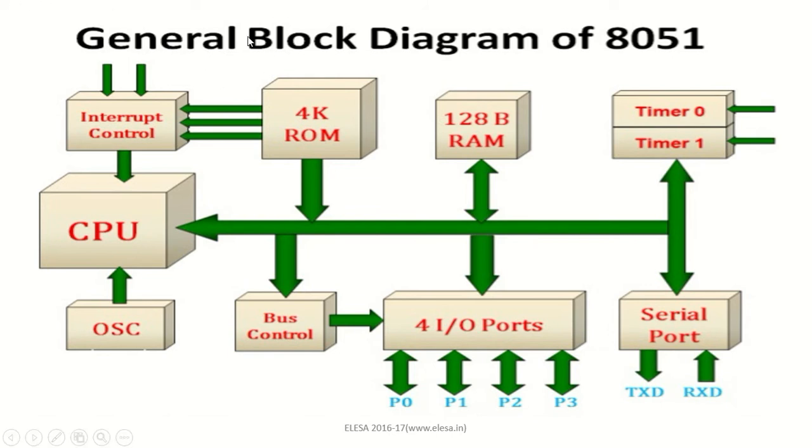As we perform the operations, we need to store some data also. To store this data, we have random access memory. The size of random access memory in 8051 is 128 bytes.